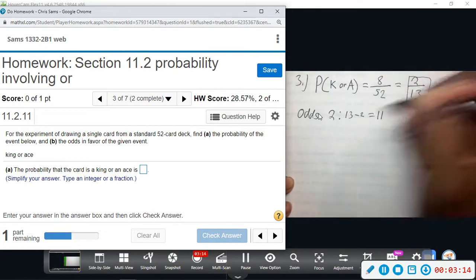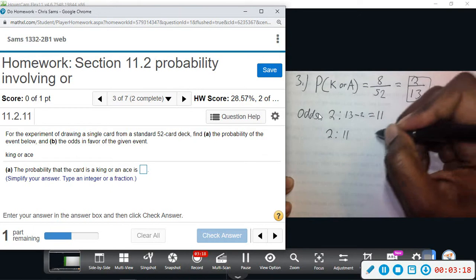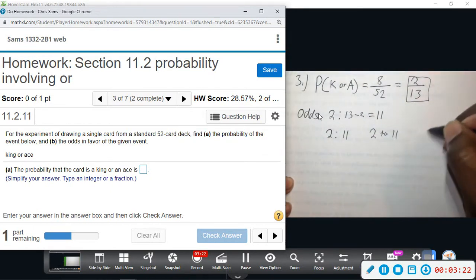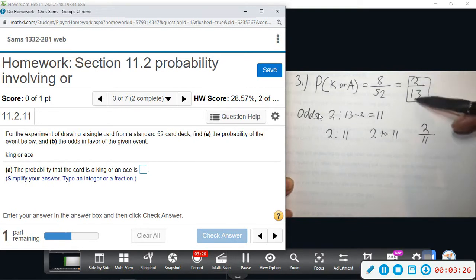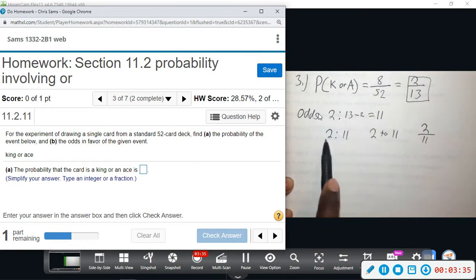So odds we would write as two colon eleven, or we can say two to eleven. Sometimes they write it like this: 2/11. Usually when we write it vertical, that's probability. Odds—you separate into groups. So you take the number on top, subtract it from the bottom number, and you write those two separately.